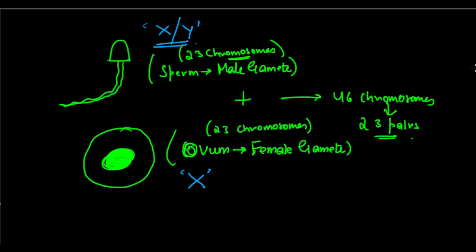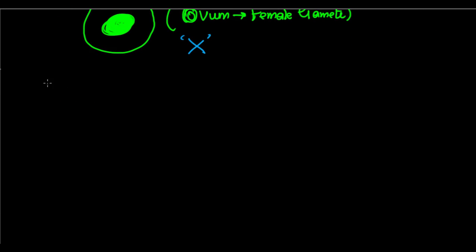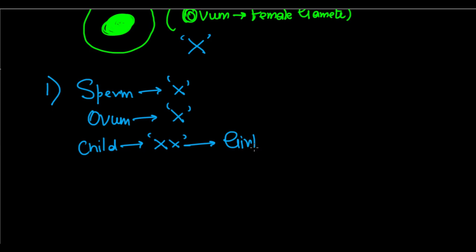Now there came two possibilities. Possibility 1: If the sperm had an X chromosome allele, and if the ovum had an X chromosome allele, then the offspring or the child would have an XX sex chromosome pair, and it would be a girl. Because X and X together, one perfect pair, it was a girl.